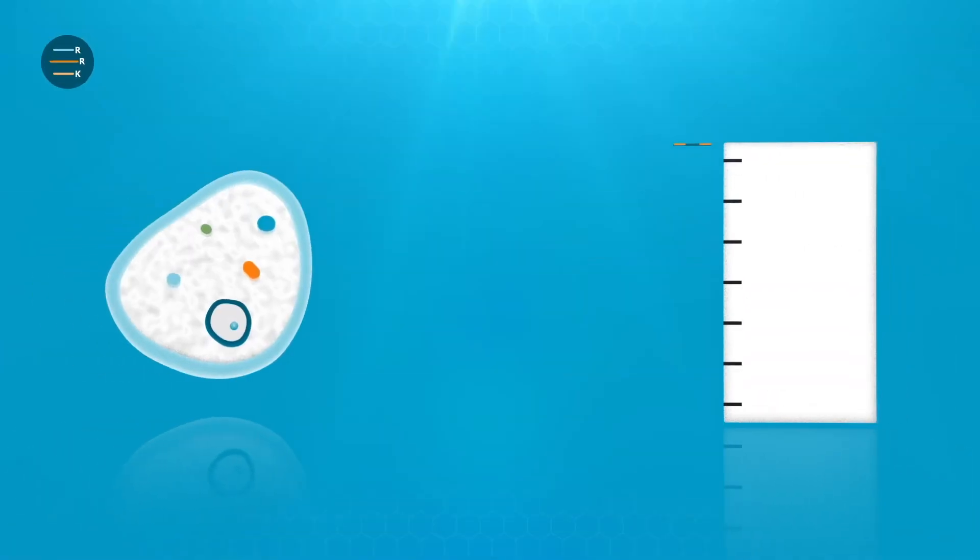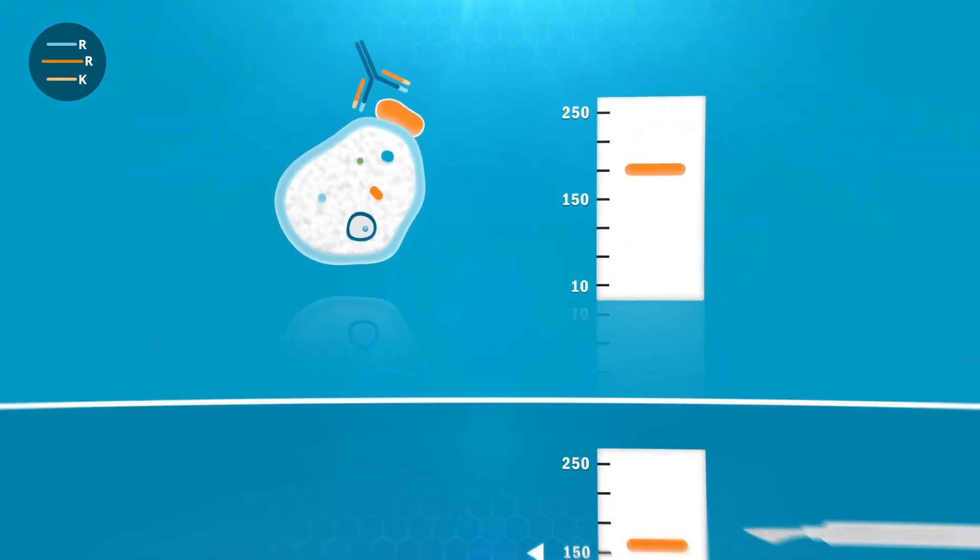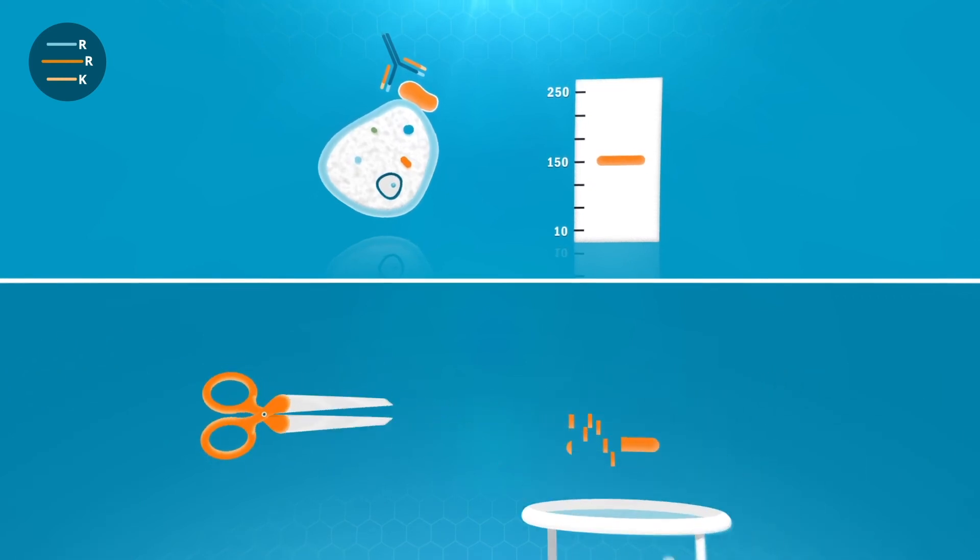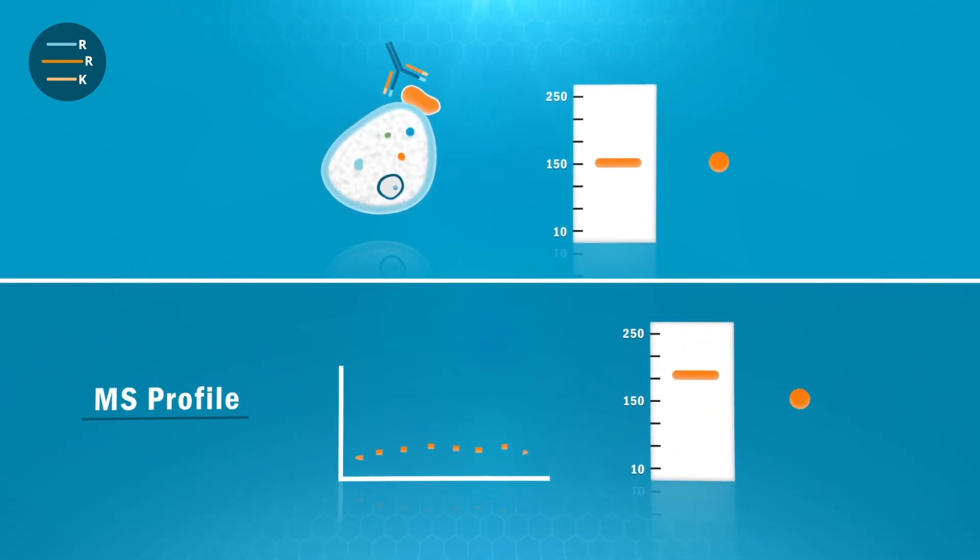In migration capture MS validation, the antibody is validated when its signal correlates with protein identification and mass spectrometry.